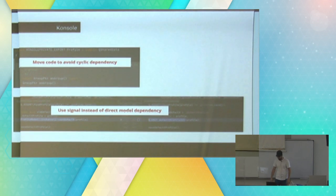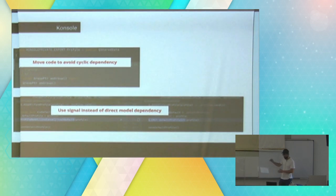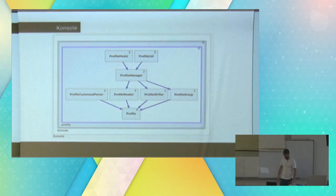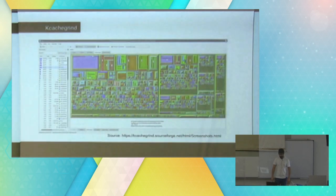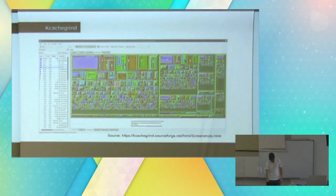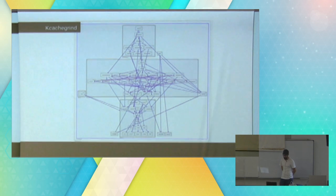In the other component, instead of directly depending on the other component, what I did was create a signal and then use the signal to make sure you don't have the explicit call to the other component. After I did that, I have a layer-led kind of structure going on in this particular package within Console, which is the profile package.